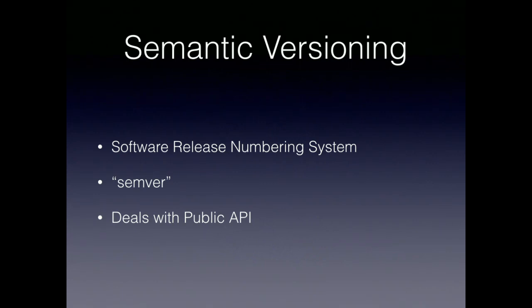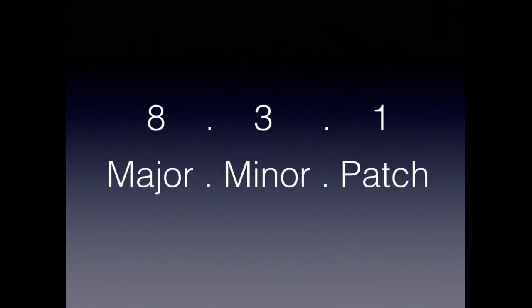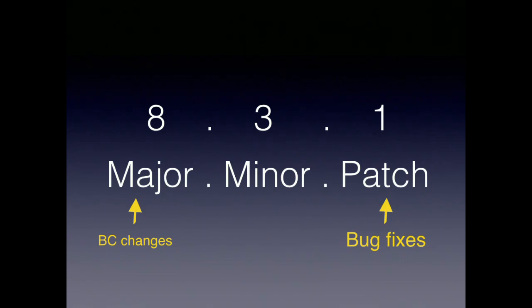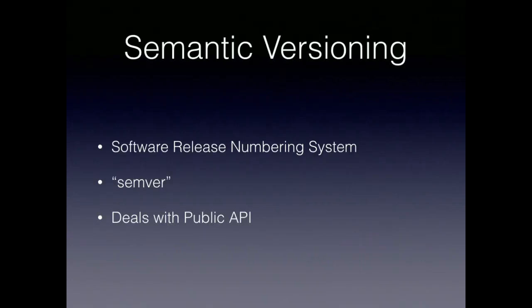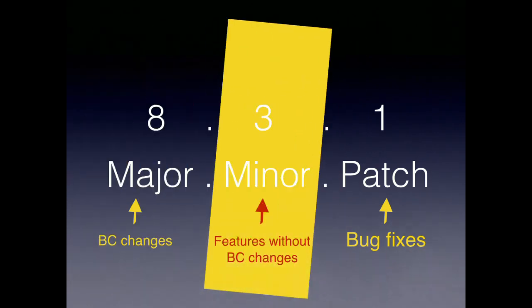This is semantic versioning — a software release numbering system often called SemVer — and it deals with the public API. We have 8 as the major version, 3 as minor, and 1 as the patch release. Patch releases are where bug fixes and security fixes go. The major version is where backwards-compatibility-breaking changes happen — like Drupal 7 to 8, you can't run the same modules. In the minor versions in the middle, we can add features without backwards-compatibility-breaking changes.